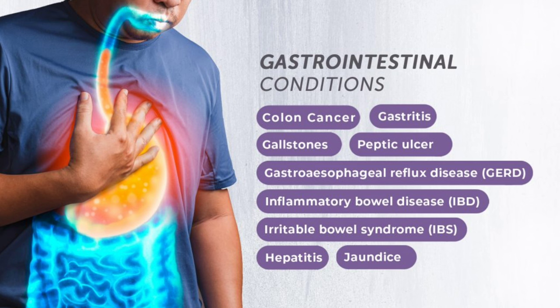Because of regurgitation, achalasia patients can aspirate and develop repeated episodes of chest infection and pneumonia. On chest X-ray you will see a mega-esophagus. The most appropriate test (gold standard) is barium meal, which shows a bird-beak appearance. The most accurate test is esophageal manometry, which shows increased lower esophageal sphincter pressure.